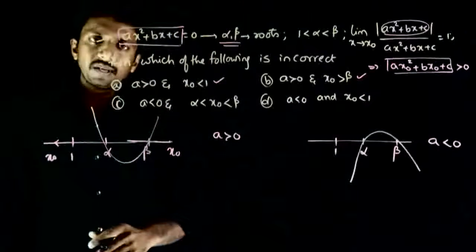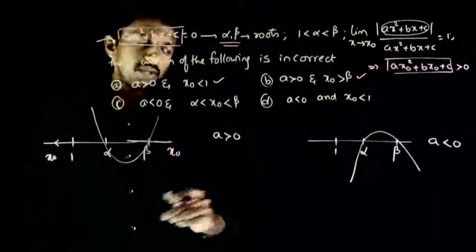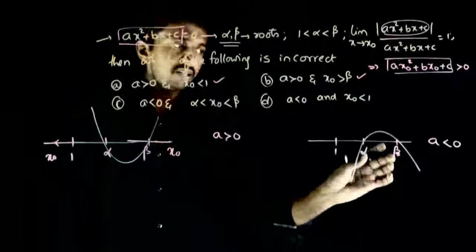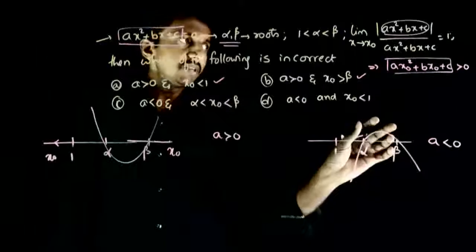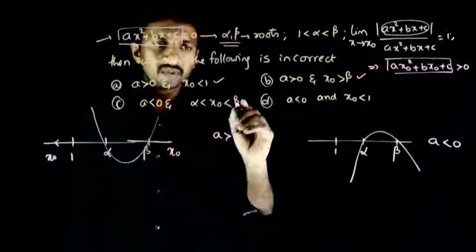Now let's check when a is less than zero. If a is less than zero and x0 lies between alpha and beta, the function is positive. So the limit value is plus one. This is also correct.